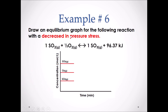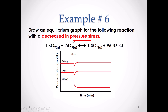Example number six. Draw an equilibrium graph for the following reaction with a decrease in pressure stress. If we decrease the pressure, we must increase the volume. Therefore, we will shift to the side with more gas moles — we will shift to the left. Since we are increasing the volume, the concentration of all gases will initially decrease, and we can see that all of the gases have spiked downwards. But after the spike, we are shifting to the left, so the concentration of both reactants will increase and then flatline back to equilibrium. The concentration of the product after the spike will continue to decrease and then flatline at equilibrium again.